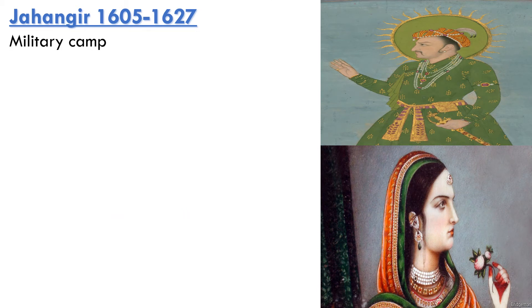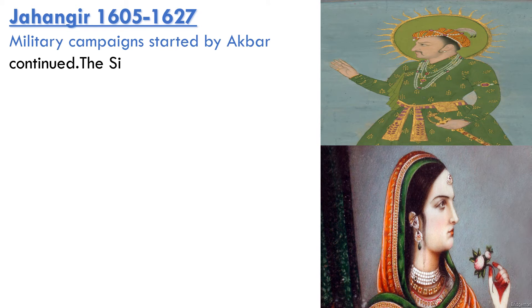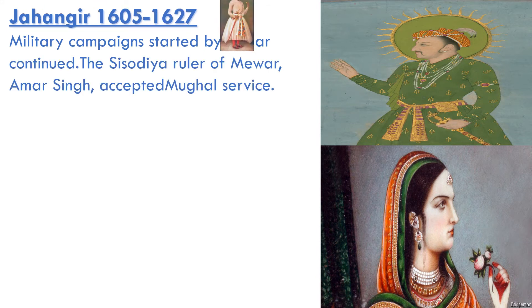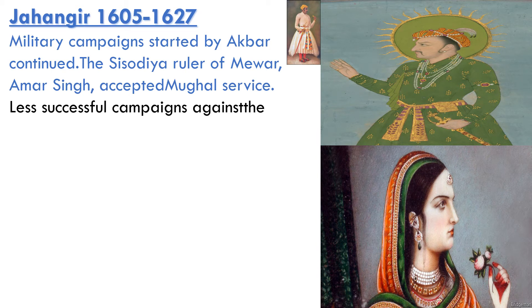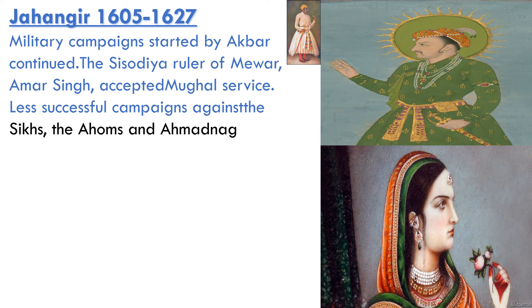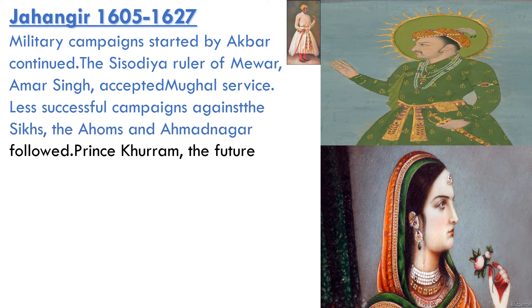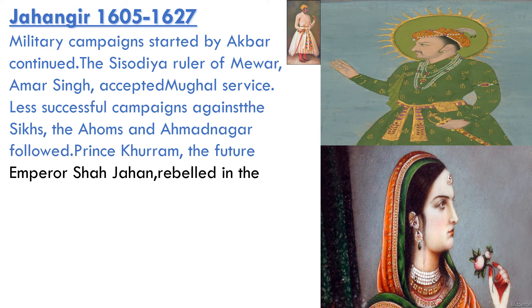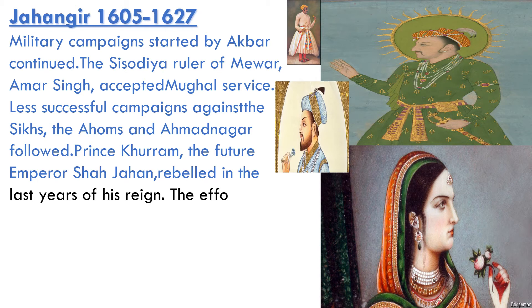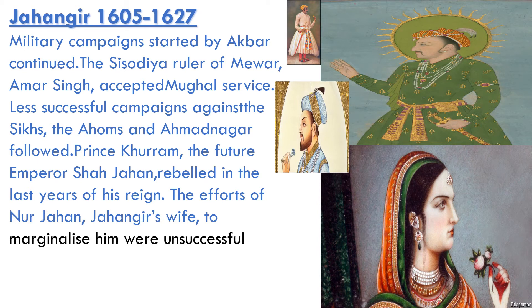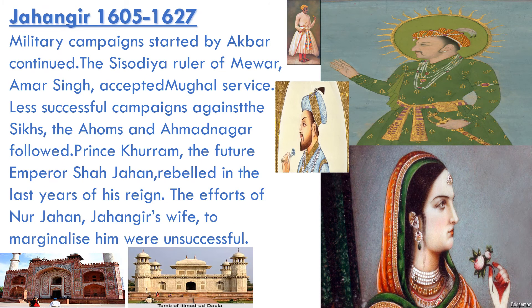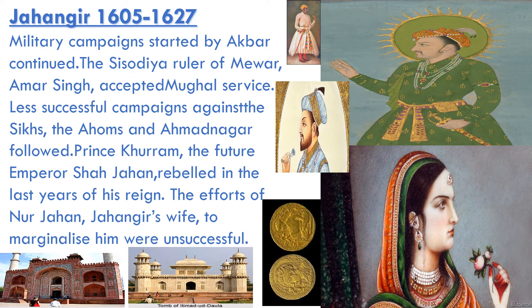In Jahangir's reign from 1605 to 1627, he followed the policies of Akbar. The Sisodia ruler of Mewar, Amar Singh, accepted Mughal service during his time. Jahangir had less successful campaigns against the Sikhs, the Ahoms — the tribal kings in northeastern India in Assam — and Ahmadnagar. Prince Khurram, the childhood name of Shah Jahan, the future emperor, rebelled in the last year of Jahangir's reign. The efforts of Noor Jahan, Jahangir's wife, to marginalize Shah Jahan were unsuccessful. Some important achievements of Jahangir include the construction of his tomb and the introduction of golden coins.